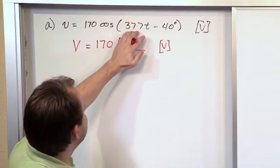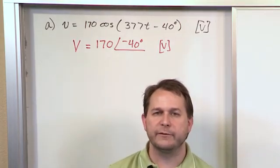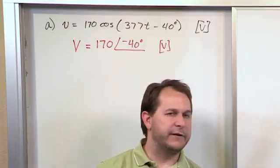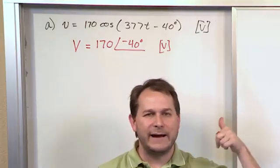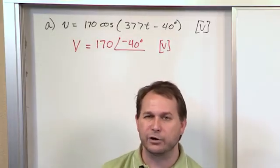Notice we don't write the frequency down at all. It is important. The frequency is very important as we analyze circuits, but what you're going to find is that, as I said before, the current and voltage anywhere in the circuit is going to have the same frequency as this, which is 377 radians per second. That's the angular frequency.